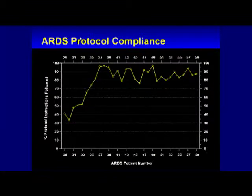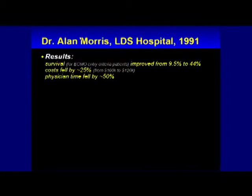What happened when we did that? Survival rates among ECMO entry criteria ARDS patients improved from 9.5% to 44% — more than a 4.5-fold improvement in survival rates. It was the first time since ARDS was defined as a syndrome in the 1960s that anyone had shown an improvement in clinical outcomes, and it was a dramatic improvement. We then deployed it across ARDSnet and validated this finding on a broad scale, fundamentally redefining this disease.